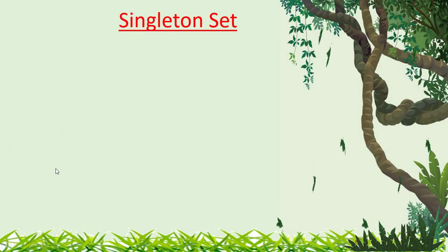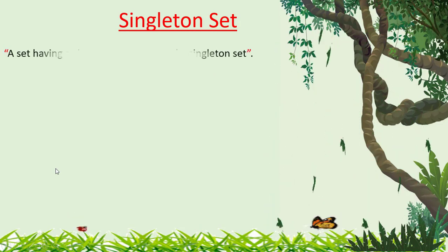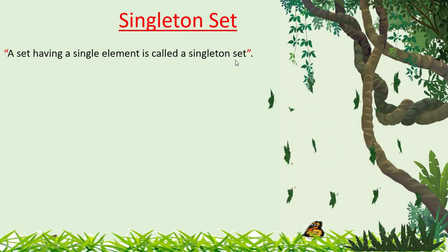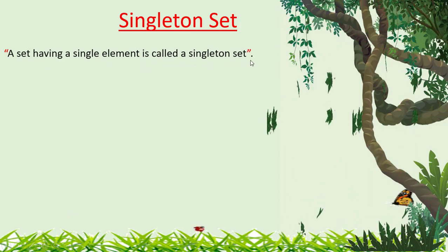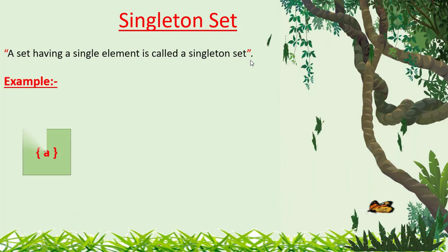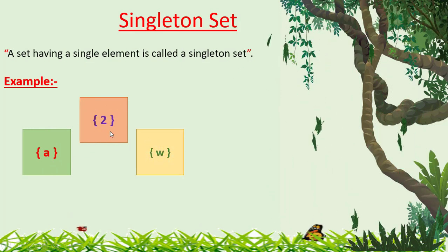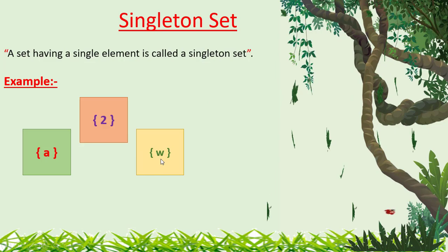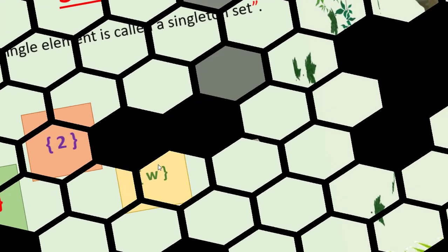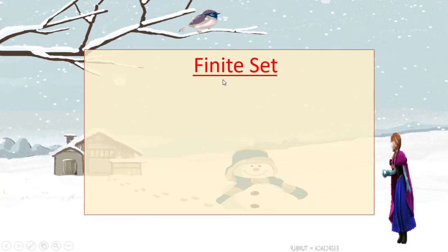Singleton set: a set having a single element is called a singleton set. Consider the given examples of sets — you can observe that there is only one element in each of these sets, so these are all singleton sets.